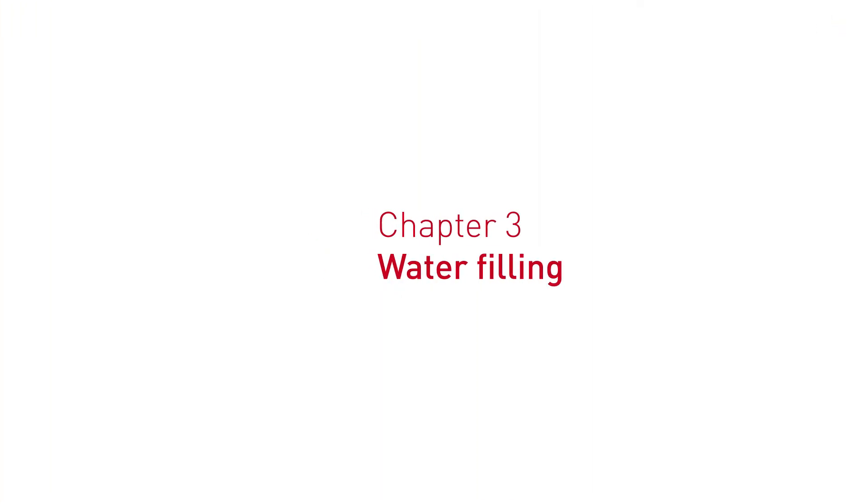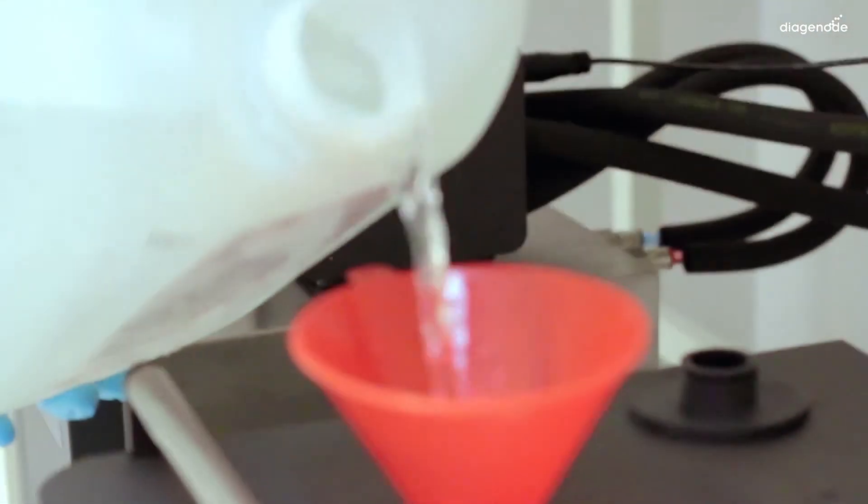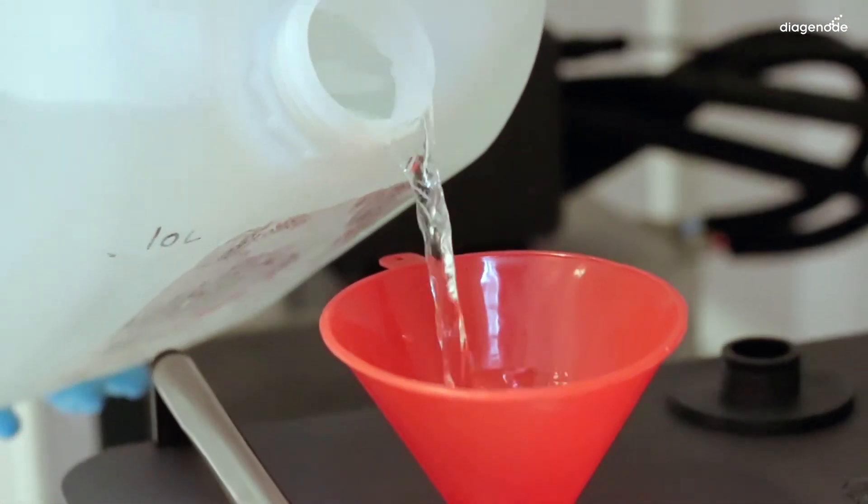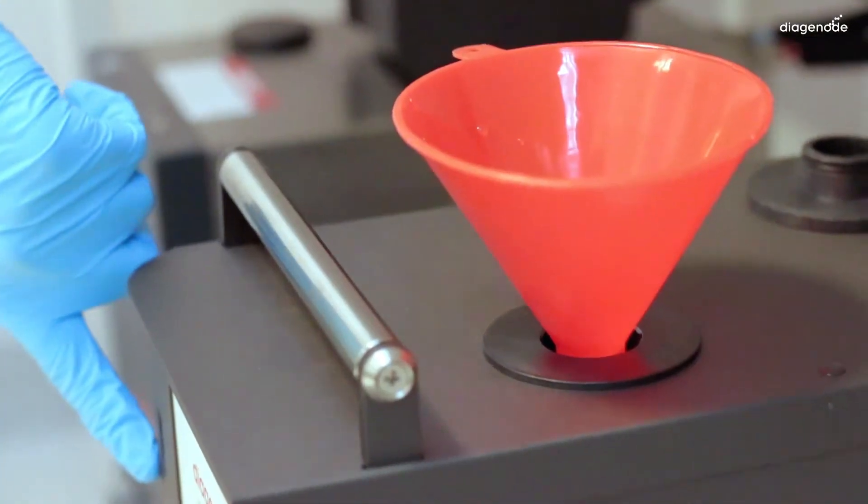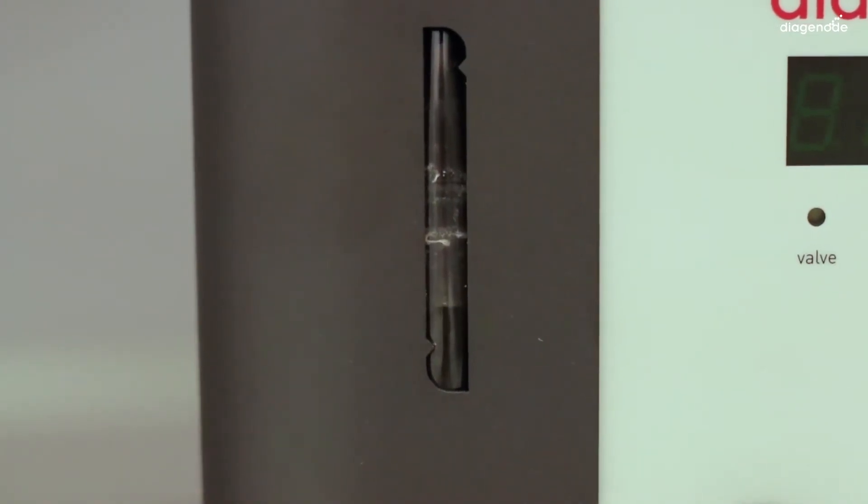Now fill the tank of the cooler with about two or three liters of distilled water. In fact, you just have to observe the water level. When the level is between minimum and maximum, stop filling.